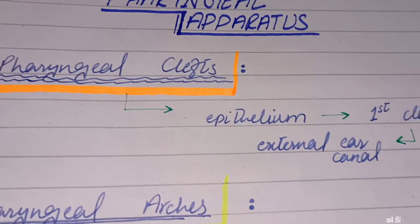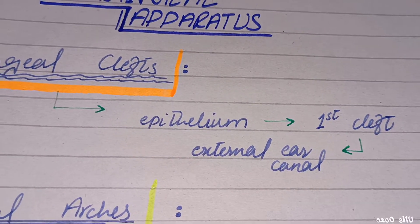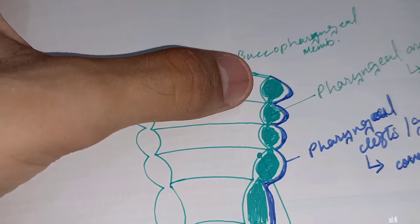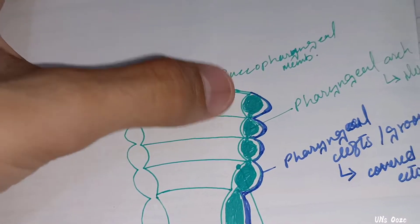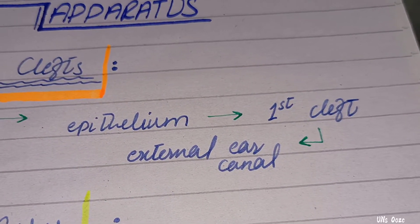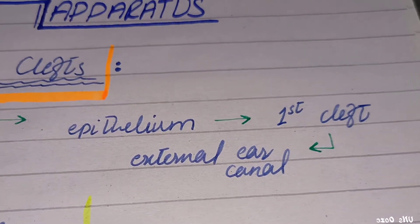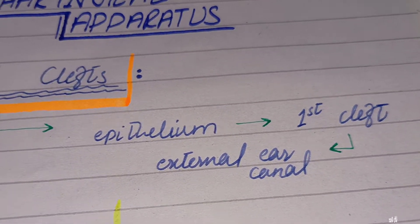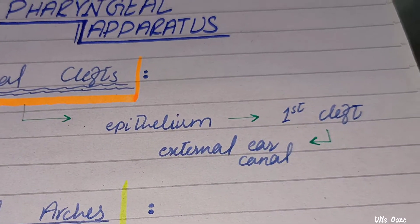Looking at the pharyngeal clefts: only the first cleft gives rise to the external ear. The other pharyngeal clefts do not give rise to defined structures.